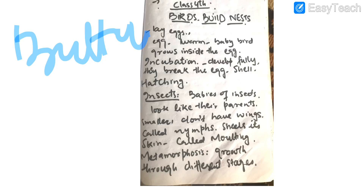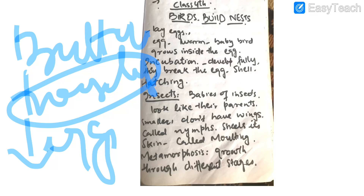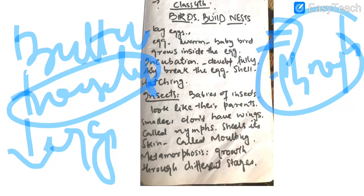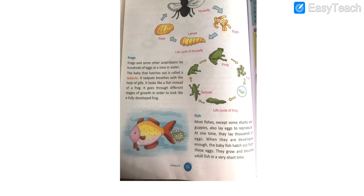Similarly, there are some insects like butterfly and housefly whose babies do not look like their parents when they come out of the eggs. Their growth goes through several stages in order to become an adult, and that process is called metamorphosis. For example, you can see in your books the life cycle of a housefly. These are the eggs of a housefly.